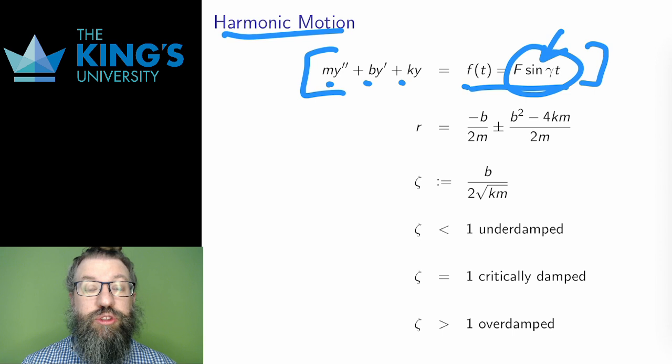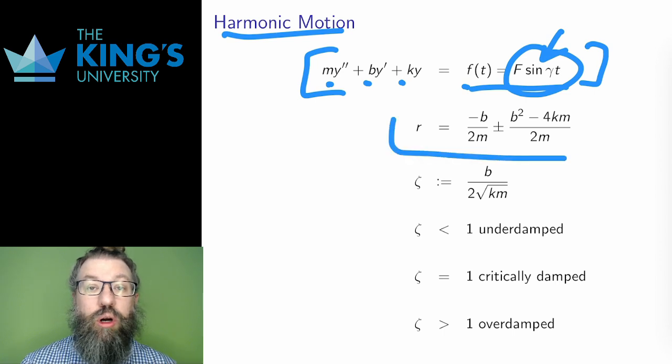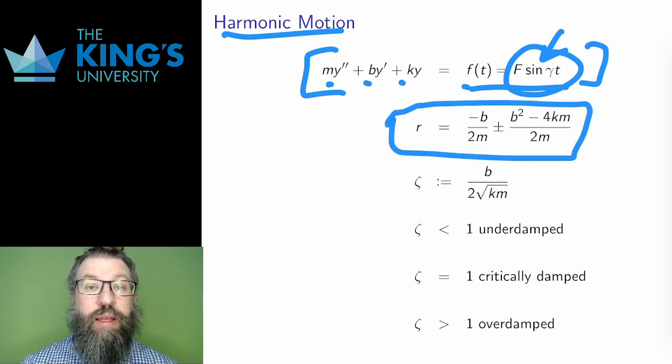The homogeneous solutions are given by e to the RT, where R is the solution to the characteristic equation. That quadratic could have real or complex roots.